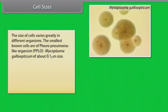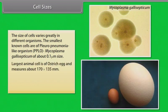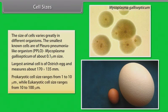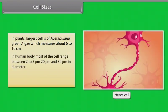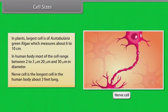The size of cells varies greatly in different organisms. The smallest known cells are those of Mycoplasma gallisepticum (PPLO), about 0.1 micrometers in size. The largest animal cell is the ostrich egg, measuring about 170 by 135 millimeters. Prokaryotic cell size ranges from 1 to 10 micrometers, while eukaryotic cell size ranges from 10 to 100 micrometers. In plants, the largest cell is Acetabularia, a green algae measuring about 6 to 10 centimeters. In the human body, most cells range between 20 to 30 micrometers in diameter. The nerve cell is the longest cell in the human body, about 3 feet long.